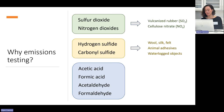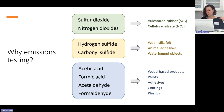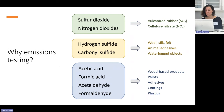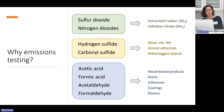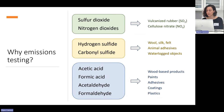Reduced sulfur gases can be produced by proteins, so animal-based materials like wool, silk or felt, animal-based adhesives, and also waterlogged organic objects such as wood. Acetic acid, formic acid, acetaldehyde, and formaldehyde can be produced by a wide range of materials such as wood-based products, paints, adhesives, coatings, and plastics. We're interested in these types of emissions because they can result in corrosion of metals, embrittlement of organic materials, colorant fading, darkening or fading of photographs, just to name a few types of deterioration phenomena.